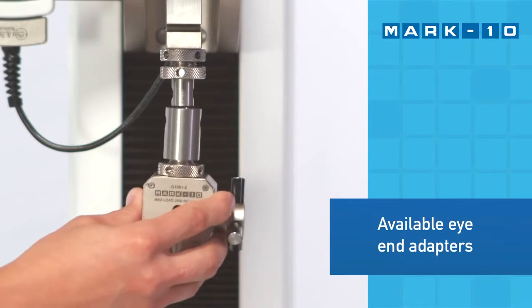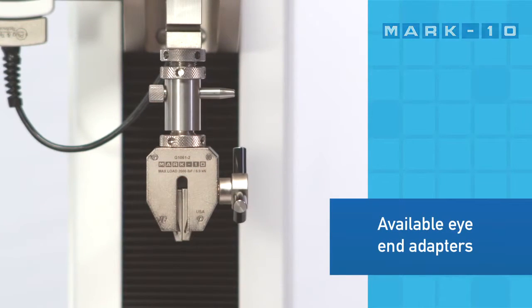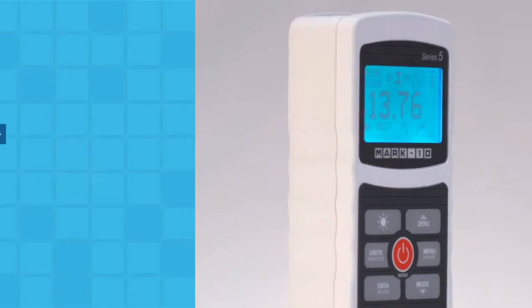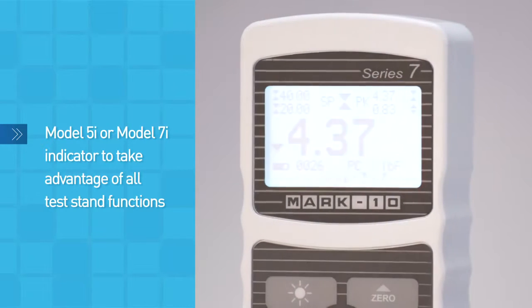Grips can be fastened onto a force gauge or load cell with or without eye-end adapters. Consider a Series 5 or 7 force gauge or indicator to take advantage of all test stand functions.